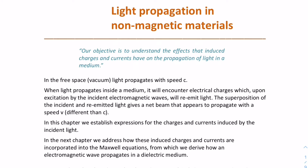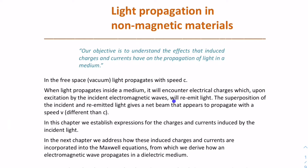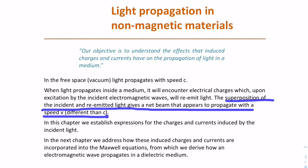We know that light propagates in free space with speed c. But when light propagates inside a medium, its speed gets reduced. But why does it happen? Well, when it propagates inside a medium, it will encounter electrical charges. And the incident electromagnetic waves excite these electrical charges, which then re-emit light. The superposition of the incident and the re-emitted light gives a net beam that appears to propagate with a different velocity v than c.